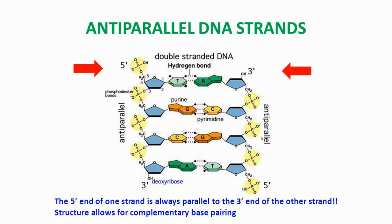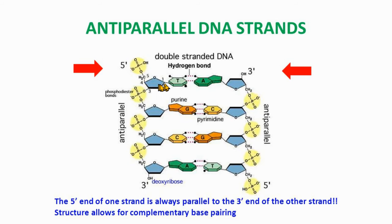DNA is actually anti-parallel — the two strands are parallel, but they're flipped relative to each other. That's where you get the five prime and three prime ends, determined by counting the carbons in the sugar. The first carbon comes off the nitrogenous base: one, two, three, four, five. At one end you have the five prime sugar closest to the end, and the three prime carbon is at the other end. The five prime sugar is closest to the phosphate head, which forms the backbone along with the deoxyribose sugar.